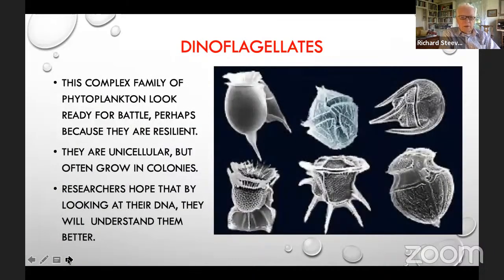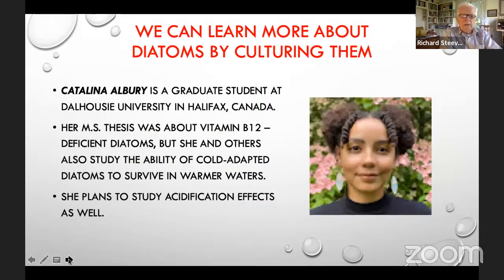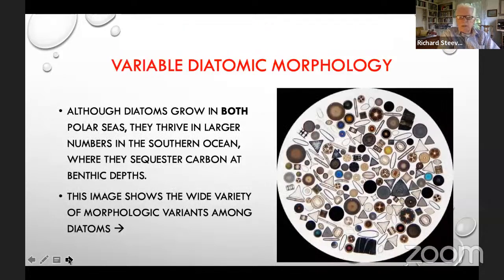Here are the dinoflagellates — a complex family of phytoplankton that look ready for battle with all their projections. They're unicellular but often grow in colonies, and we're still studying their DNA. Diatoms are incredible — the different shapes they can have. There's a researcher at Dalhousie University in Halifax, Catalina Albury, whose master's thesis was about vitamin B12-deficient diatoms. They're looking into cold-adapted diatoms to see how they might survive in warmer waters, and she plans to study acidification effects as well.